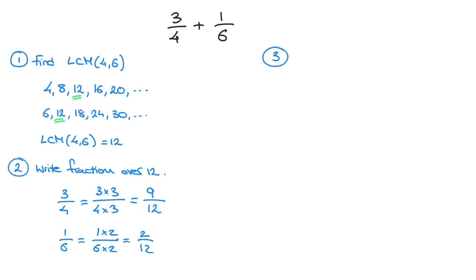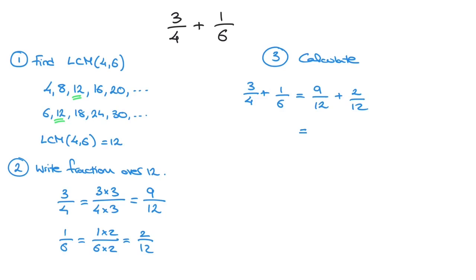We move on to the third and final step, step 3, and that's simply to calculate. At this stage, we can write 3 over 4 plus 1 over 6 equals 9 over 12 plus 2 over 12. Because both fractions are written over 12, we can add their numerators together. That's equal to 9 plus 2 over 12. And finally, 9 plus 2 is 11, so that's 11 over 12. And that's the final answer.